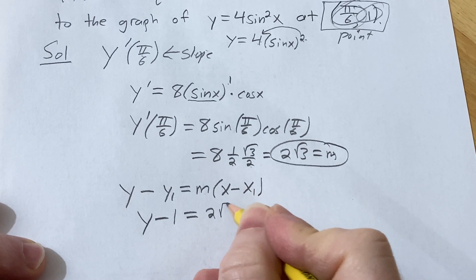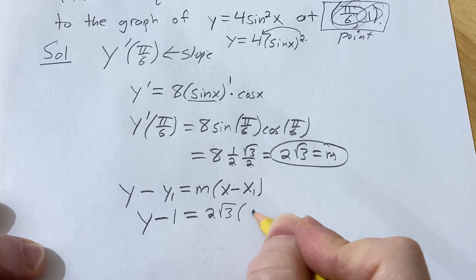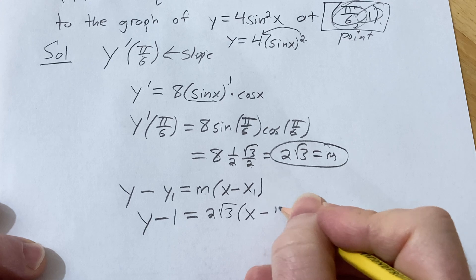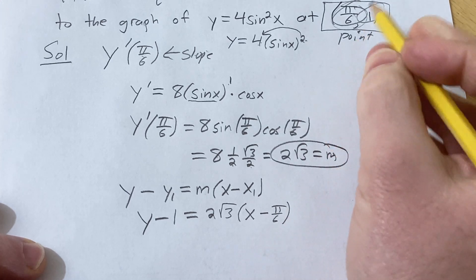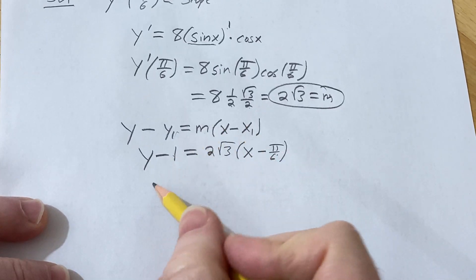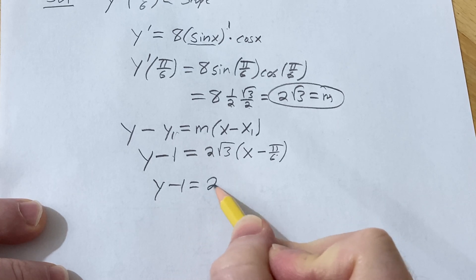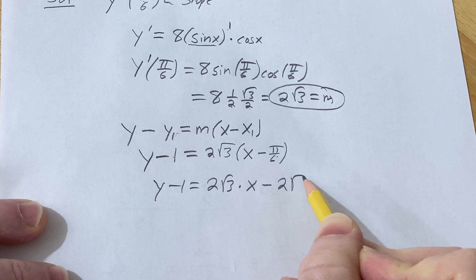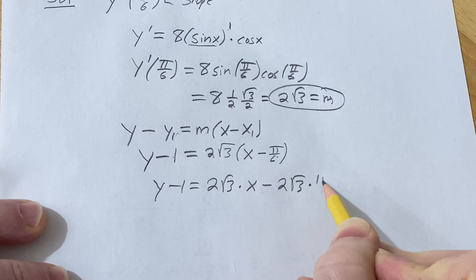√3 times (x - π/6). Let's distribute this through: y - 1 = 2√3·x - 2√3·π/6.